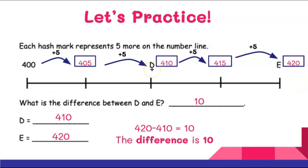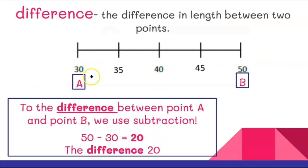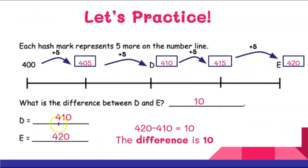Now I have to figure out the difference between D and E. D was 410 and E was 420. To find the difference we use subtraction. I always start with the larger number: 420 minus 410 equals 10. The difference is 10. I'll check by counting up by fives from D: 5, 10. Yes — the difference between D and E is 10.